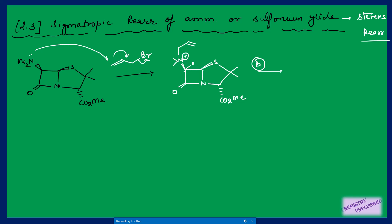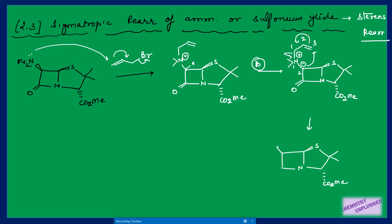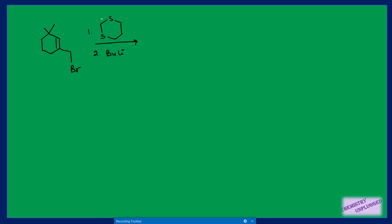The proton adjacent to both nitrogen and sulfur, as well as to a carbonyl group, is quite acidic and is easily removed. This generates the ylide — a [2,3]-sigmatropic system. The carbanion attacks C3, bonds shift, and the last arrow ends on the nitrogen atom. The NMe₂ group remains, and the allyl group attaches from below the plane to give the final product.